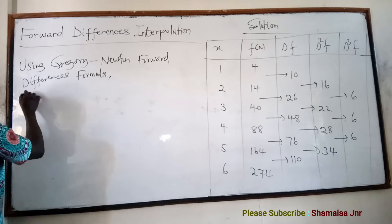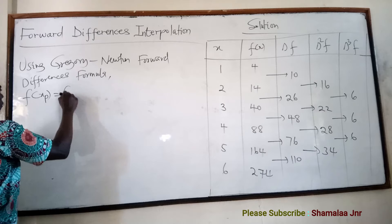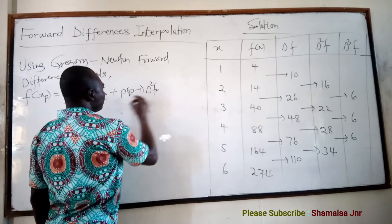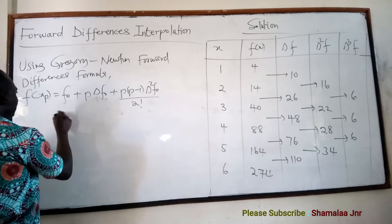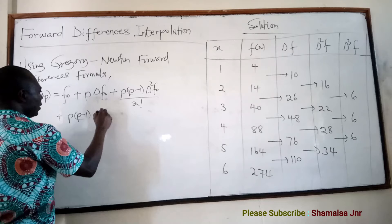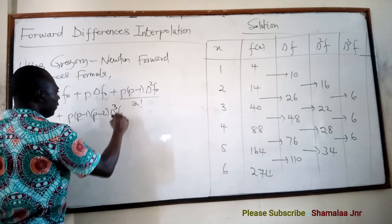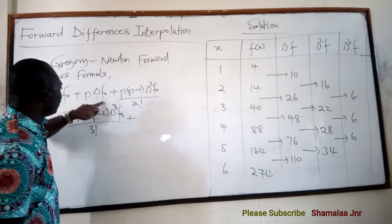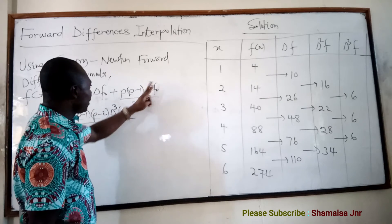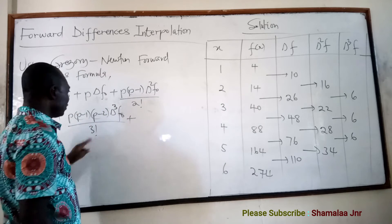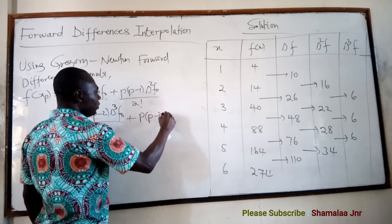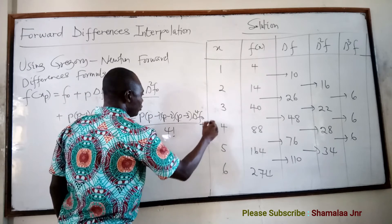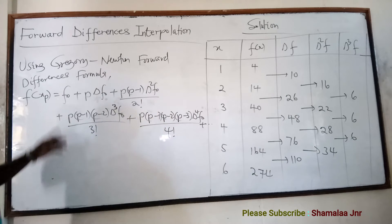The Gregory-Newton forward differences formula is: f(xp) = f0 + p·Δf0 + p(p−1)·Δ²f0 / 2! + p(p−1)(p−2)·Δ³f0 / 3! + p(p−1)(p−2)(p−3)·Δ⁴f0 / 4! + and so on. It follows a pattern — the power of delta and the factorial in the denominator match the number of p-factors in the numerator.